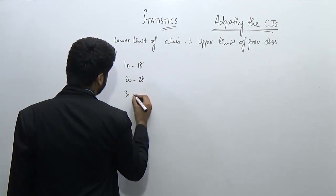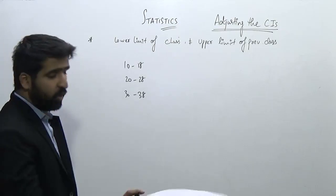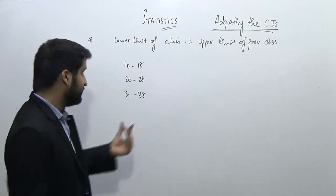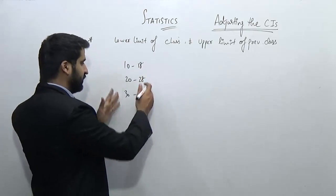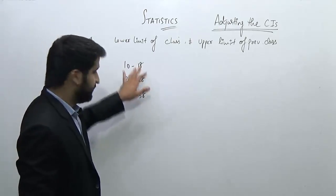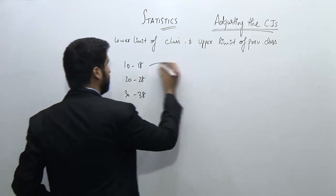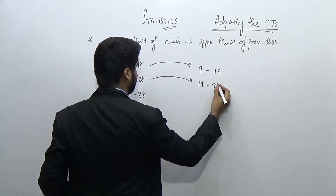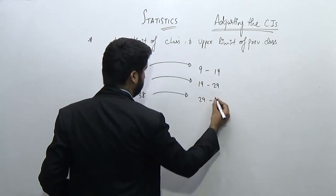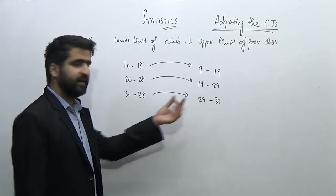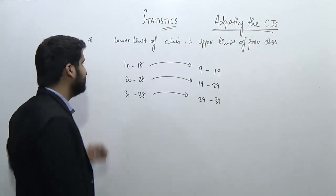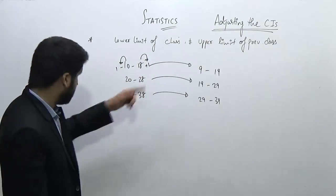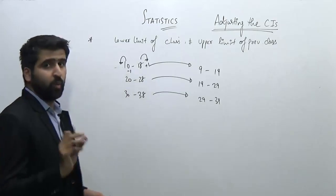Suppose the class intervals are like this. How can we adjust them to make regular data? What I can do is expand the class intervals so the whole data becomes regular. I will make them 9 to 19, 19 to 29, and 29 to 39. So I am subtracting something from the lower limit and adding something to the upper limit — for example, 10 minus 1 and 18 plus 1.